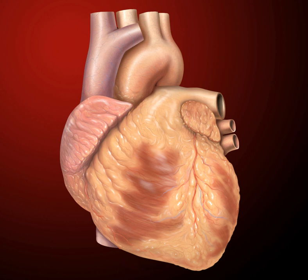The human heart is situated in the middle mediastinum, at the level of thoracic vertebrae T5–T8. A double membrane sac called the pericardium surrounds the heart and attaches to the mediastinum. The back surface of the heart lies near the vertebral column, and the front surface sits behind the sternum and rib cartilages. The upper part of the heart is the attachment point for several large blood vessels: the venae cavae, aorta and pulmonary trunk.